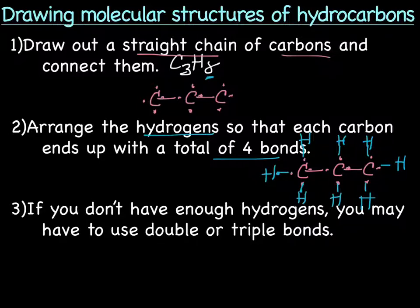And something we will also be working with is that if you don't have enough hydrogens, you may have to use double or triple bonds. So let's try one like that really quickly. Say I gave you C3H6. So again, we have three carbons. And those are connected. But we only have six hydrogens and we have eight bonding spots.